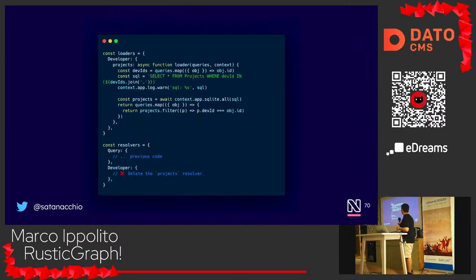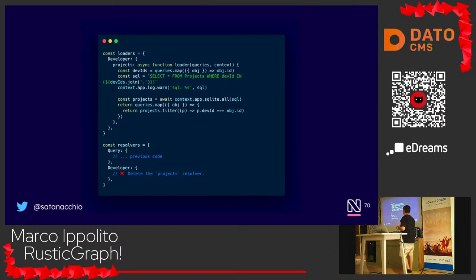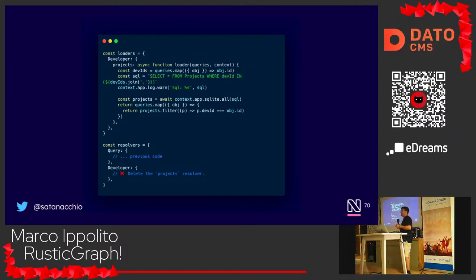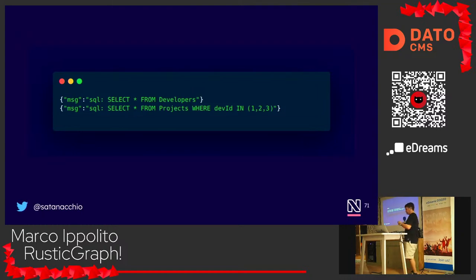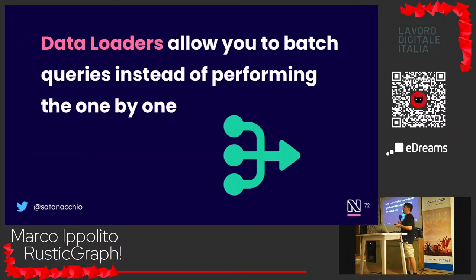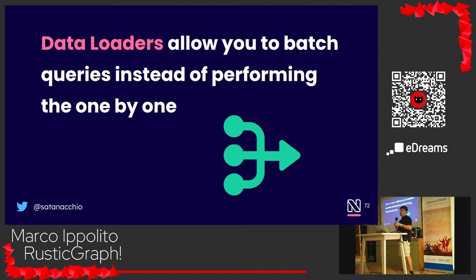In Mercurius we have something called loaders — data loaders — which allow you to batch queries. We delete our individual resolver and create a loader instead. This loader does the same thing but batches all the queries together. The result is just one query to retrieve all developers and all their projects at once. This is very important for performance, because database queries are expensive and you want to group them as much as possible.